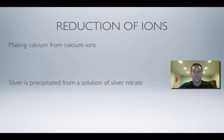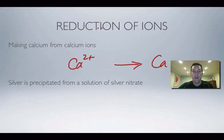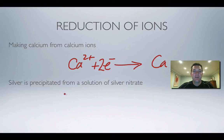Nearly finished with reduction of ions — this is ions gaining electrons. Everything so far has involved monatomic ions. For calcium being formed from calcium ions: we start with Ca²⁺ and make calcium metal. It's reduction, so electrons go on the left. The left-hand side is more positive, so we add two electrons there to balance the 2+ charge — the calcium ion gains two electrons and becomes calcium metal.